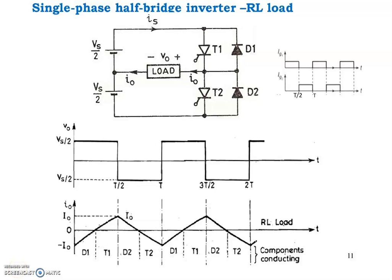In this lecture, we will discuss the single-phase half-bridge inverter with RL load — that is, resistive-inductive load. A single-phase half-bridge inverter consists of two thyristors T1 and T2 and two diodes D1 and D2. Diode D1 is connected in antiparallel with thyristor T1, and diode D2 is connected in antiparallel with thyristor T2. The circuit requires a 3-wire supply. The source voltage is Vs/2, which is a DC voltage.